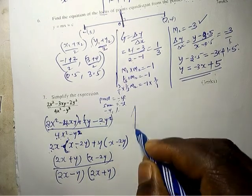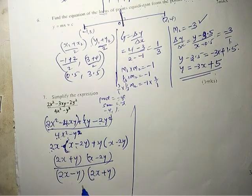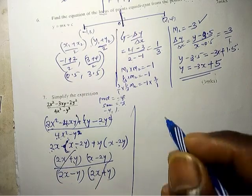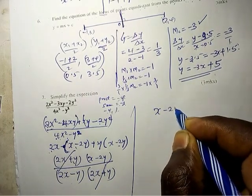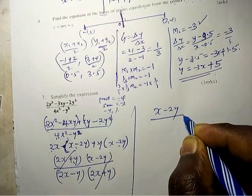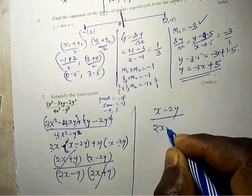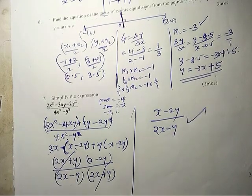So after doing that, now you can simplify. You can see this one and this one we simplify, so we have (x - 2y) divided by (2x - y). That is the final answer.